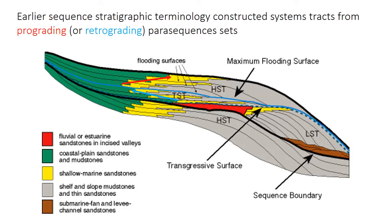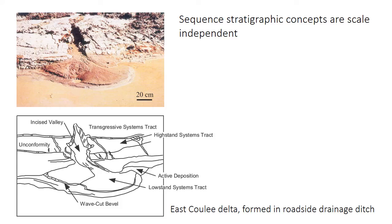So somehow within the TST there are little progradational packages, but the overall pattern is one of stepping backwards. This idea that systems tracks are built from multiple parasequences stacked in either prograding or retrograding sets is unnecessary, and it's also somewhat obsolete.